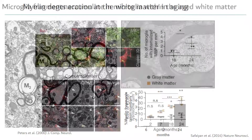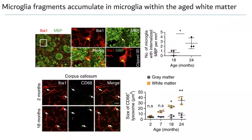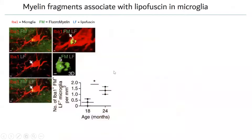To identify which cells are involved, we stained microglia and myelin and found a small fraction of microglia containing pieces of myelin in the white matter, starting at 18 months and accumulating at two years. We and others observed an expansion of microglia number specifically in the white matter — not in gray matter — and these aging white matter microglia have more and larger lysosomes, indicating engagement with phagocytic processes.